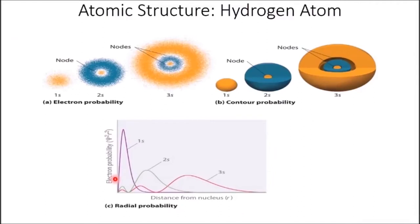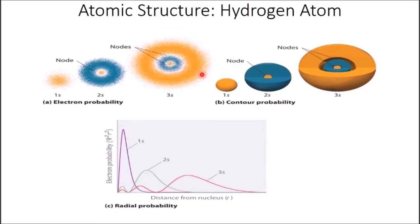Let's look more closely at the 1s, 2s, and 3s orbitals for hydrogen. Notice the radial probability as a function of distance from the nucleus. The 1s orbital is smallest; the 2s is bigger; the 3s is bigger still. Notice the nodes — areas of destructive interference where the phase changes from positive to negative. Where they overlap you get destructive interference and a node. No electrons can exist at a node. This all comes from the wave and particle properties of electrons.